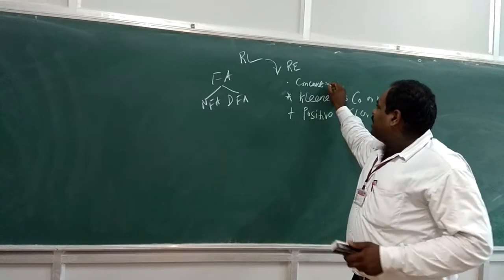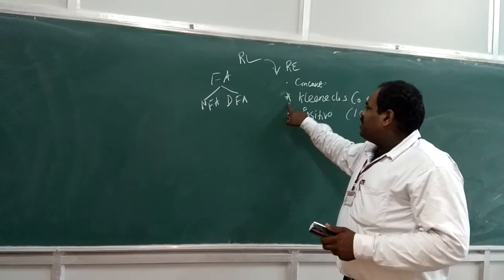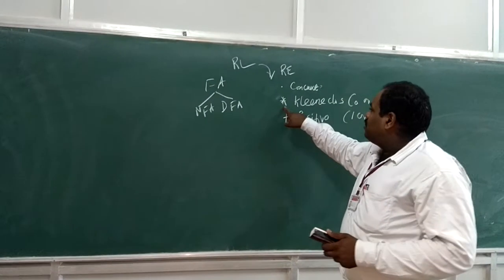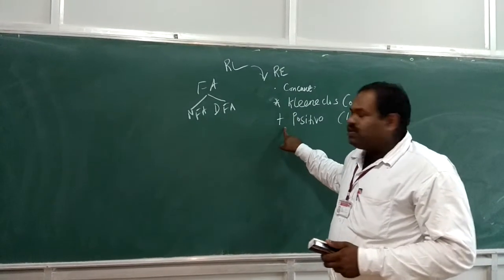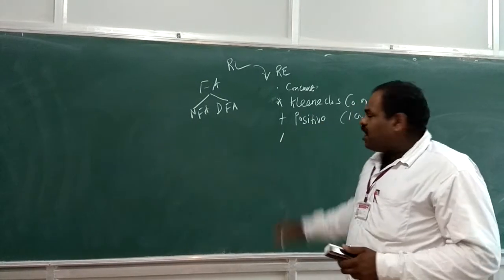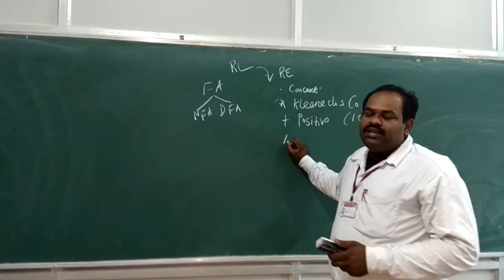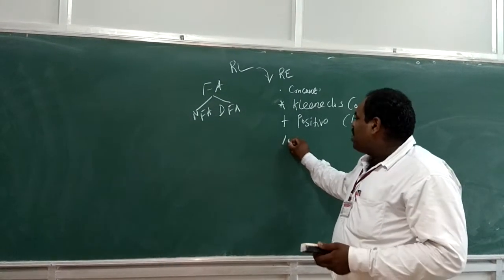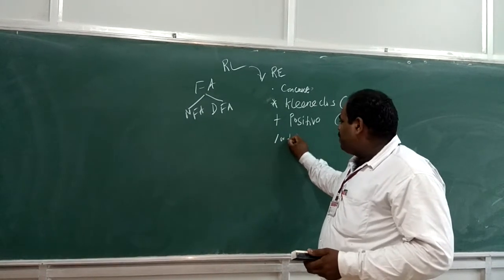That is concatenation. Then we have the Kleene closure, then positive closure. And finally we have the OR operation. That is A OR B. It can be denoted by slash sometimes. Some notation is the union symbol.